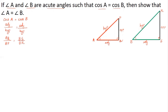Now if we cross multiply and rearrange, taking BS to the left hand side and AP to the right hand side, we get AQ divided by BS is equal to AP divided by BR. Observing the figure, two pairs of corresponding sides are in proportion in triangle AQP and BSR.